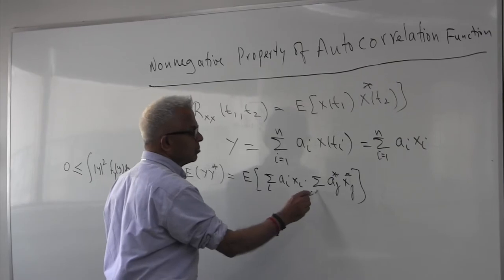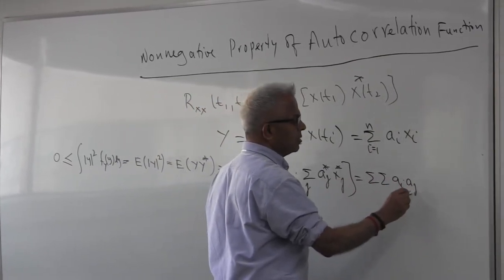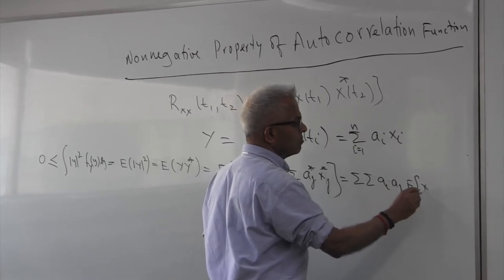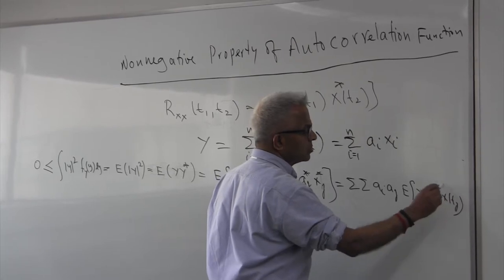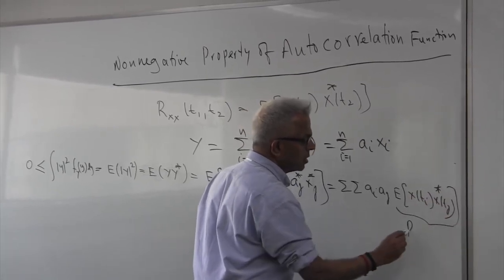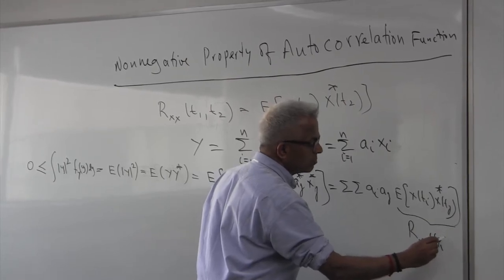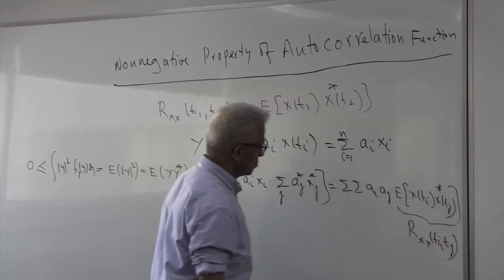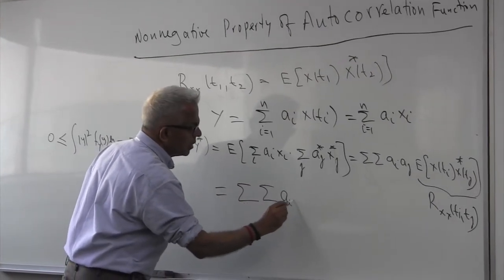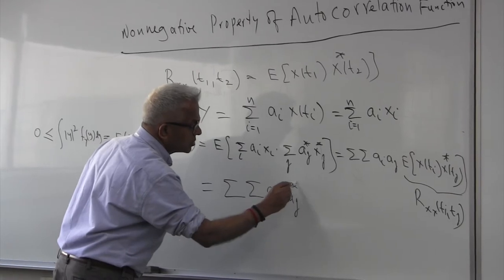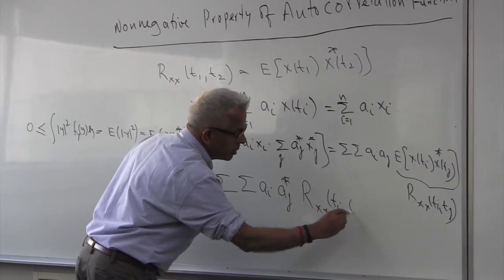I can write it like this, one summation on i, one summation on j. If I pull out the summations and the constants outside, then I get this to be expected value of Xi Xj star. But this is nothing but Rxx(Ti, Tj). So look, I have this expression, Ai Aj star Rxx(Ti, Tj).